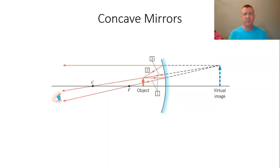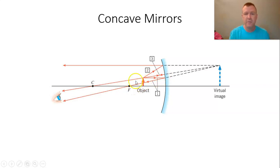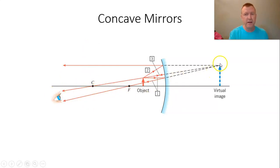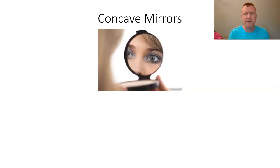The other situation with concave mirrors is when the object is inside the focal point — that's the case where you see a large upright image. We draw the three rays: one parallel reflecting through the focal point, one away from the center of curvature reflecting back, and the third going away from the focal point reflecting parallel to the axis. In this situation the rays diverge. Your brain extends them back and it looks like they're all coming from the other side of the mirror — a virtual image that is right side up and bigger than the object.